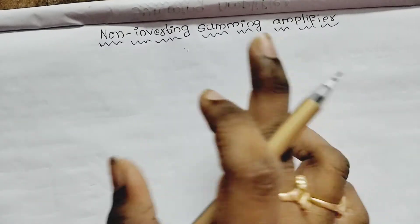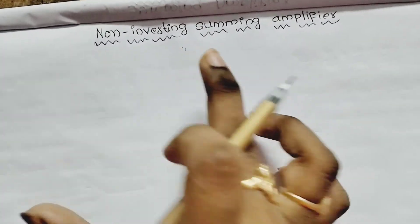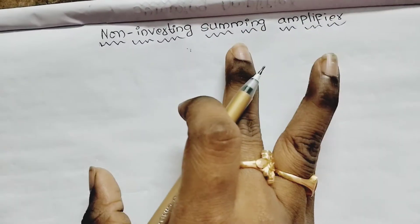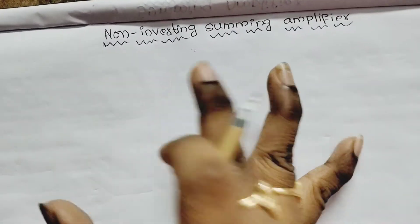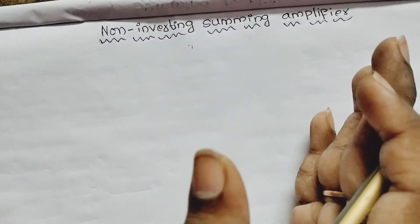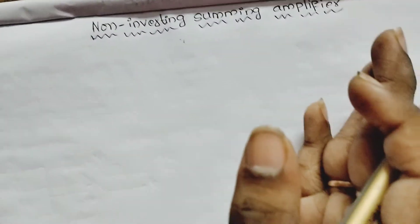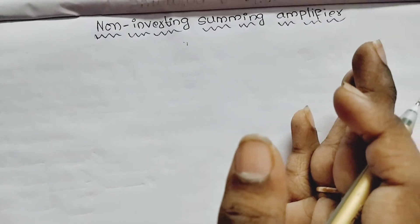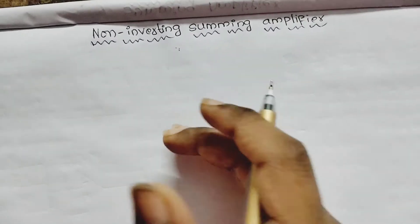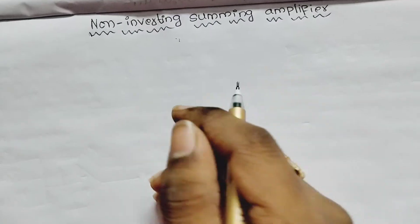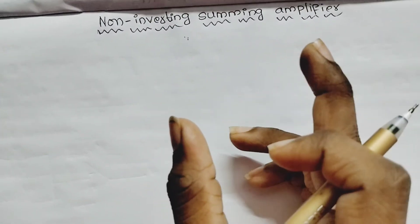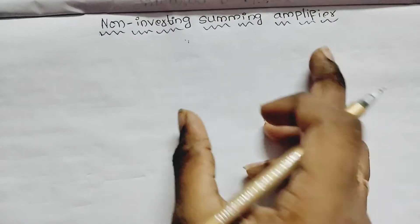The difference between the two is: the inverting pin is used for inverting summing and the non-inverting pin is used for non-inverting summing. The output is created by the inverting pin, while the non-inverting pin handles non-inverting. So now we will do the Non-Inverting Summing Amplifier procedure.